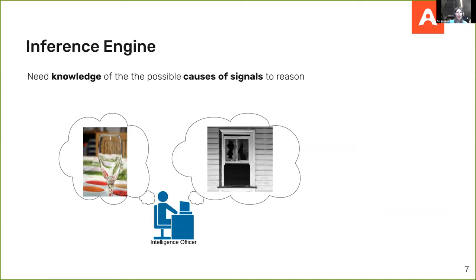The critical part is the inference engine. We need some sort of knowledge of the possible causes of a signal to reason. As a concrete example, say a microphone picks up the sound of smashed glass. A human intelligence officer would reason: maybe it's someone breaking into a window, or maybe someone just dropped a tray of glasses in the dining area. To make a decision, they take into account everything they know — where's the sensor located, what's nearby. But for a machine, where does it get that information?